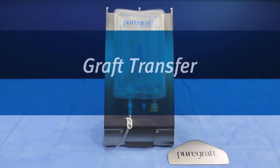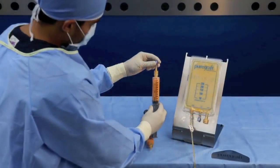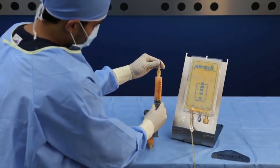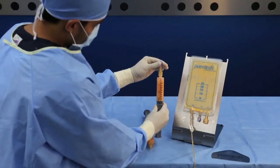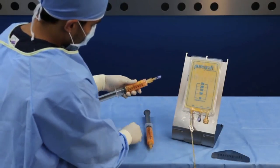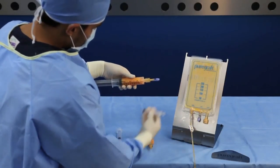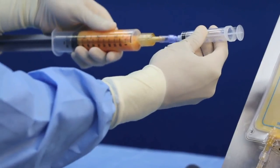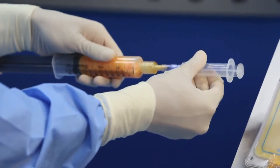The extracted graft can be transferred from a Toomey to a luer lock syringe using the supplied tapper to luer lock adapter. First, attach the adapter to the tapper end of the Toomey syringe, then attach a luer lock syringe on the blue end of the adapter.